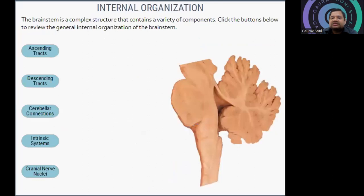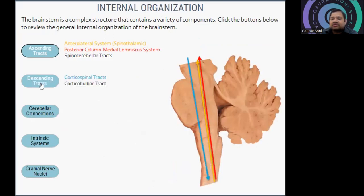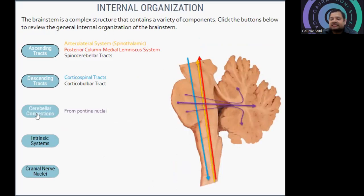Internally, the brainstem is a complex structure containing a variety of components. There are different types of ascending fibers: the anterolateral system (spinothalamic), the posterior column medial lemniscus system, and spinocerebellar tracts. There are also descending tracts such as corticospinal and corticobulbar tracts, as well as cerebellar connections from the pontine nucleus to the cerebellum.